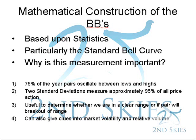If we're using two standard deviations, two standard deviations mathematically measure approximately 95% of all price action. Therefore, if the bands are measuring two standard deviations and a pair is outside of that 95% — in the 96th, 97th, or 98th percentile or above — then the volume and order flow has to be heavily skewed in one particular direction. This also gives us a clear idea whether we are in a range or whether we're going to break out of the range, so we don't trade reversal strategies when the pair is trending.